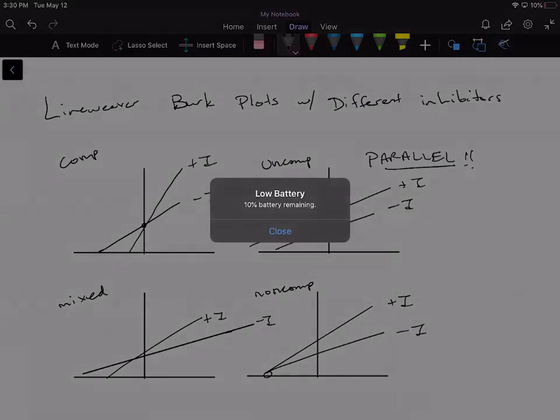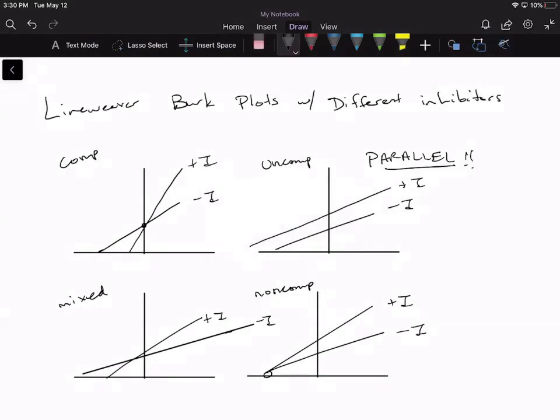So over here I drew out competitive, uncompetitive, mixed, and non-competitive inhibitors and how their plots would change by adding those respective inhibitors.